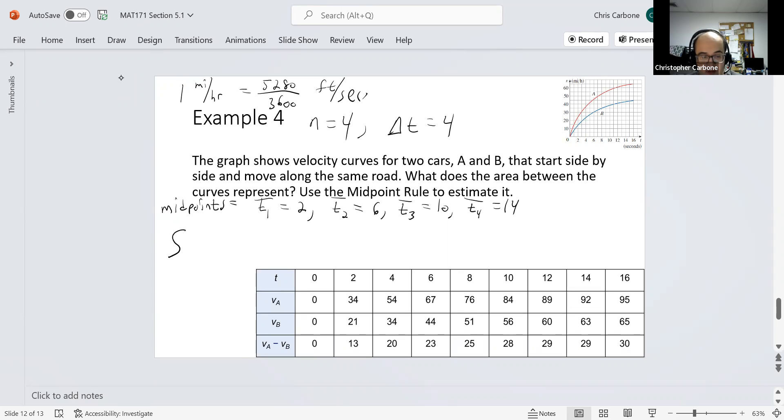This will be calculated as the integral between 0 and 16 of V sub A minus V sub B dt, and that's approximately delta T times 13 plus 23 plus 28 plus 29. So 4 times 93, that's 372 feet in this particular instance.